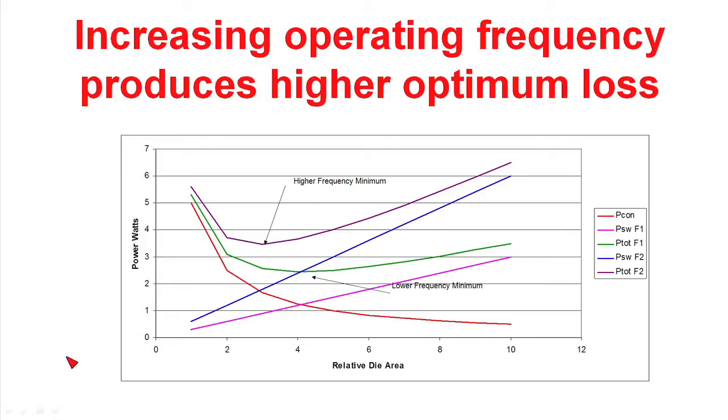What I have drawn on this curve is this red curve represents the conduction losses within the power supply. For instance, if we double the size of the die, we've reduced the resistance by half and then cut the conduction loss in half. So as we make the die larger and larger, we continue to reduce the conduction loss.